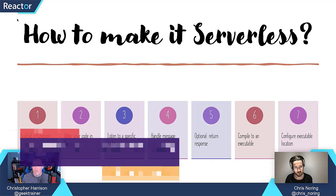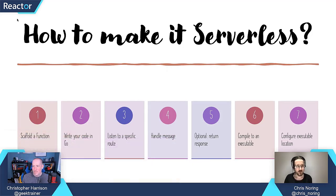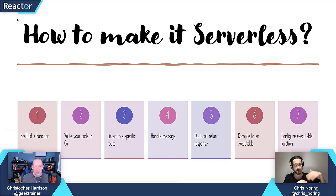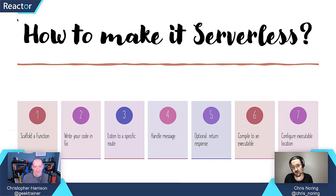Let's talk about our game plan. If you've ever scaffolded a function before in Azure Functions, you know that the first step is to scaffold up a function. Once you have a function up, you scaffold it because you have n number of endpoints in that function. There's no difference here when it comes to using custom handlers and using Go. You scaffold up a function and author your code in Go — that's the second step.